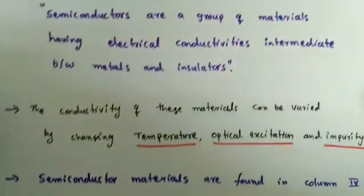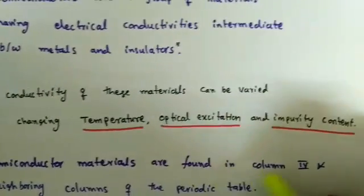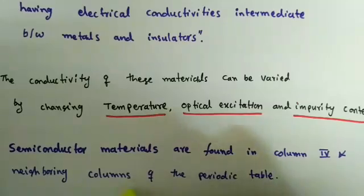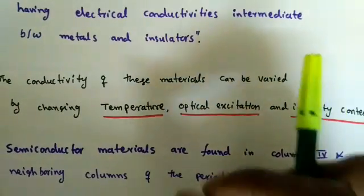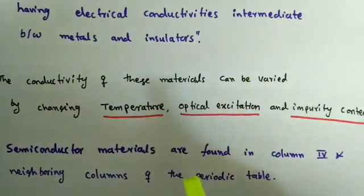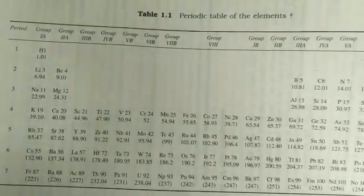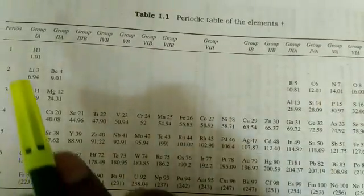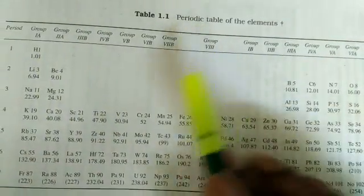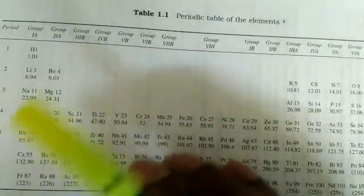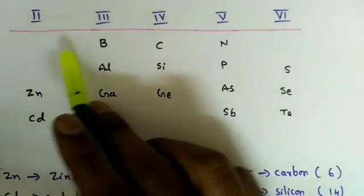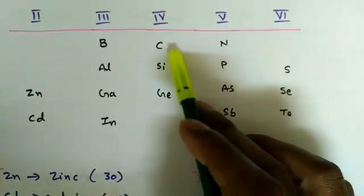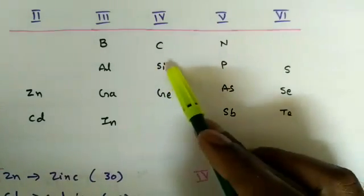Semiconductor materials are found in column 4, or the 4th group, and neighboring columns of the periodic table. The 4th group elements are directly semiconductors, and we can make compound elements using neighboring columns. In the periodic table there are groups 1 to 8, but among these we pick certain groups whose elements behave like semiconductor materials — specifically the 2nd, 3rd, 4th, 5th, and 6th groups.